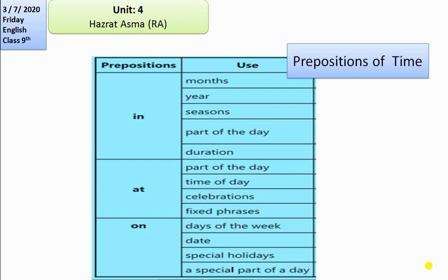A preposition of time is a preposition that allows you to discuss a specific time period, such as a date, days, week, month, years, seasons, part of the day, duration, celebrations, fixed phrases, days of the week, special holidays, and special parts of a day. In preposition of time, we have three prepositions: in, at, and on.